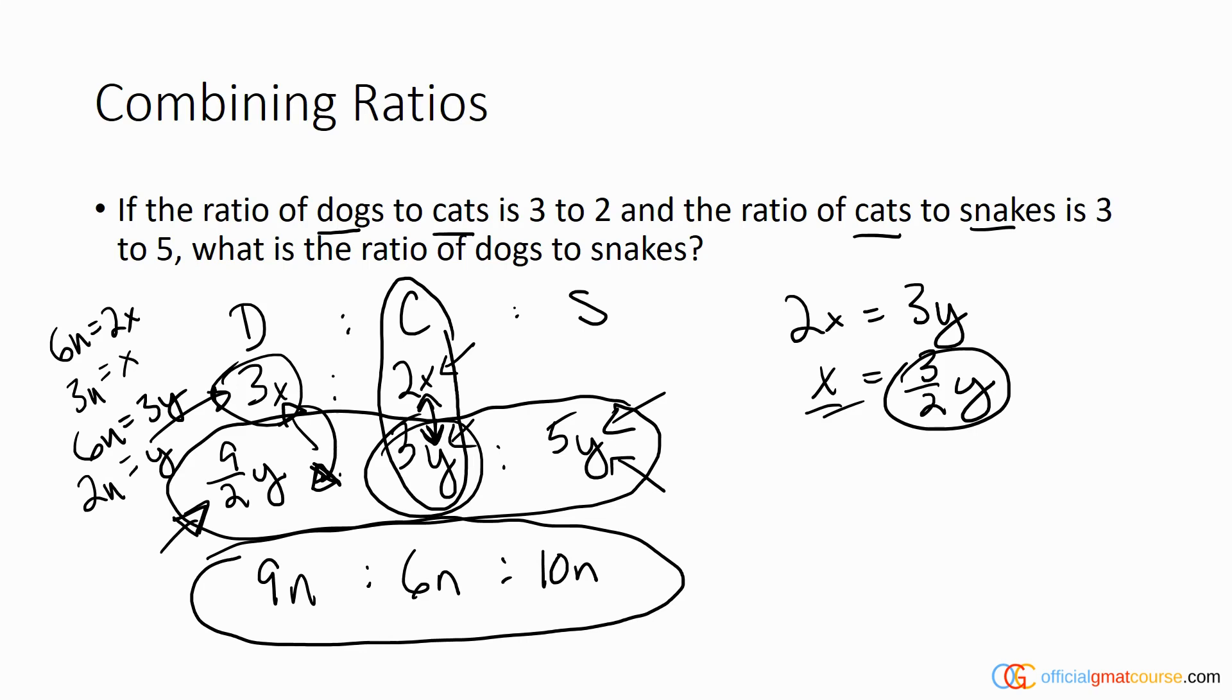And now I have the simplest version of my ratio where all the numbers are whole integers. So the ratio of dogs to snakes is a ratio of 9 to 10, because 9n to 10n where n is the multiplier.